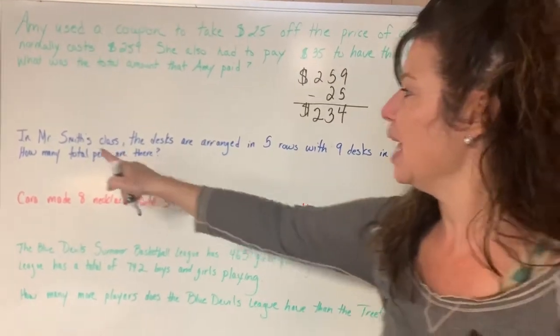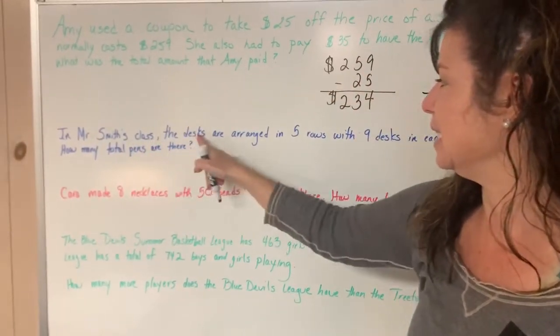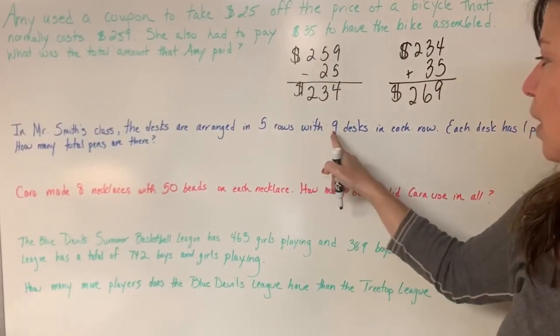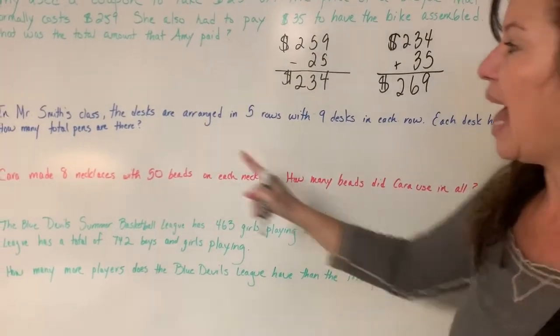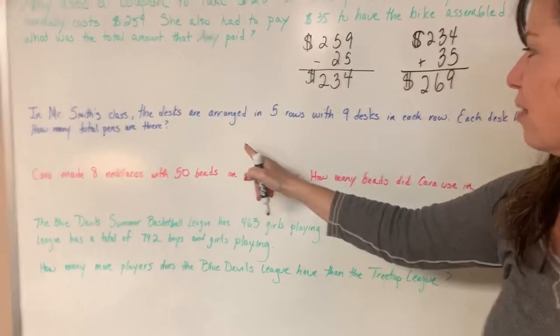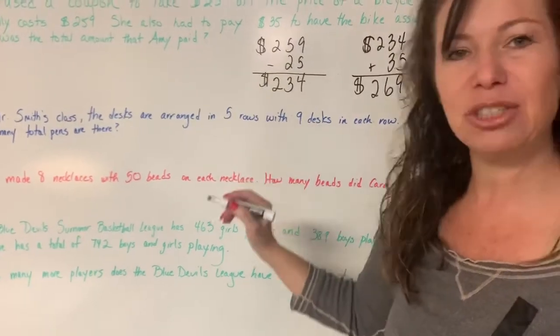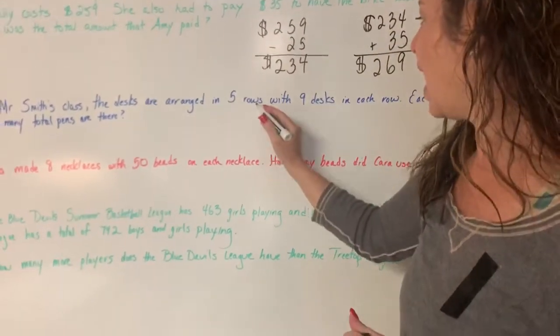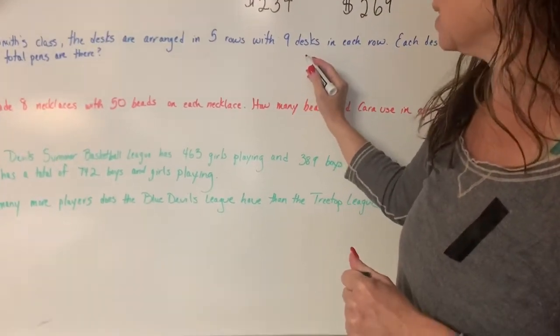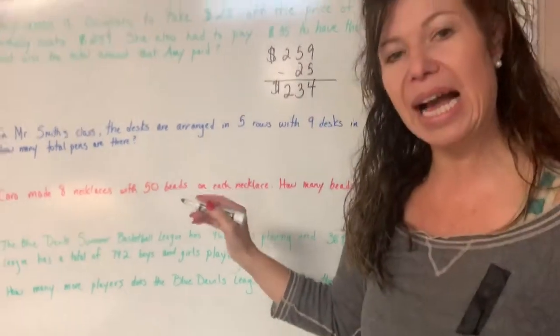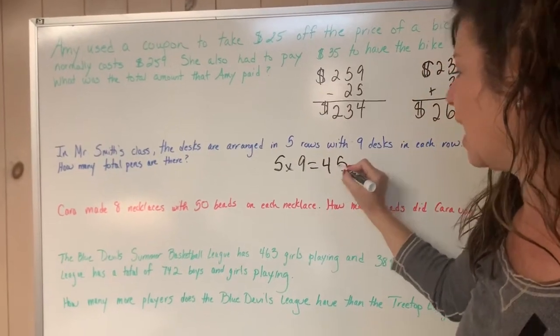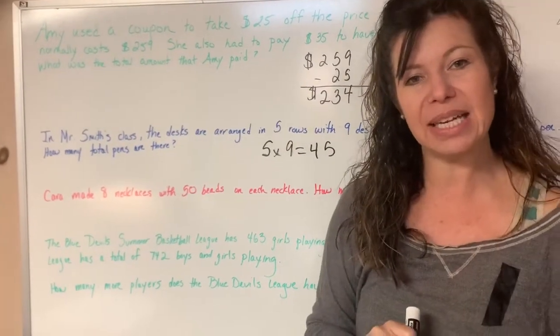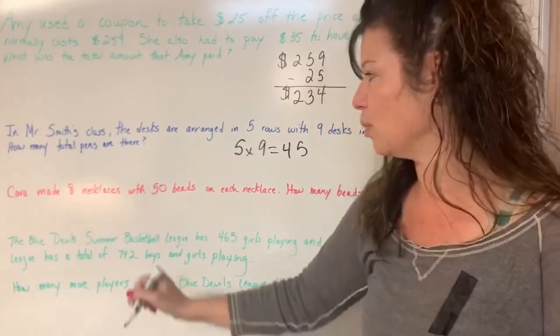Let's look at the second one. In Mr. Smith's class, the desks are arranged in five rows with nine desks in each row. Each desk has one pen on it. How many total pens are there? I picture this with an array. Five rows with nine desks. So if I drew an array, I know to multiply. So five times nine equals 45. There are 45 pens on each desk. Let's check out the next one.